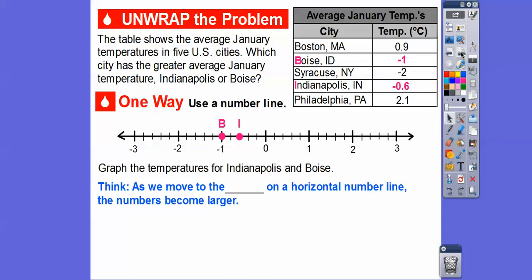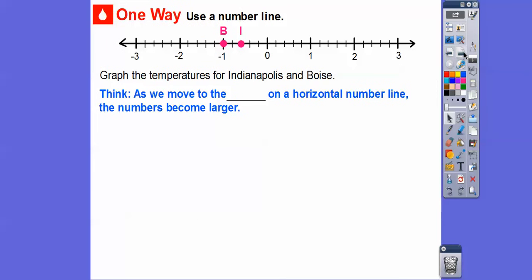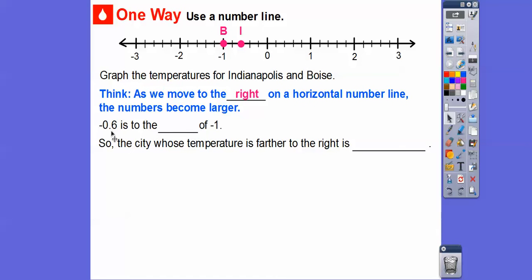So it depends on which number is to the left. As we move to the right on the horizontal number line, the numbers become larger — isn't one bigger than zero, isn't two bigger than one? As we go to the right, the numbers become larger; as we go to the left, they become smaller. So negative 0.6 is to the right of negative one. The city whose temperature is furthest to the right is Indianapolis, so Indianapolis has the greater temperature.